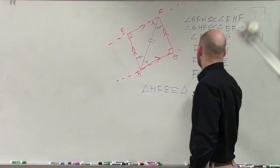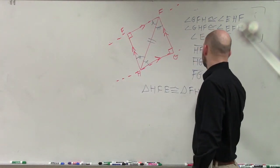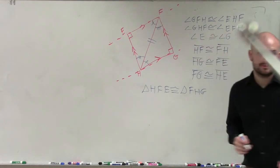So I need to do the same thing when I order this triangle. So therefore, it needs to be triangle FHG, OK?